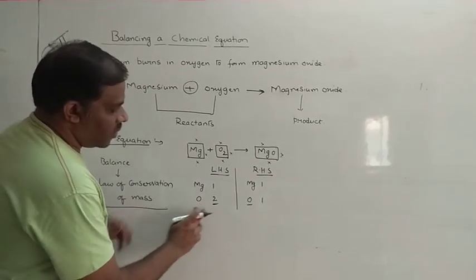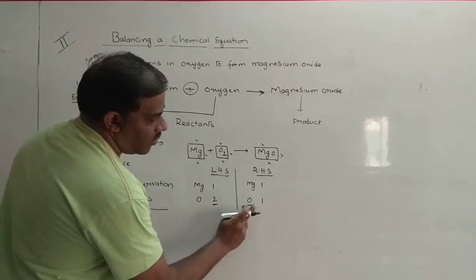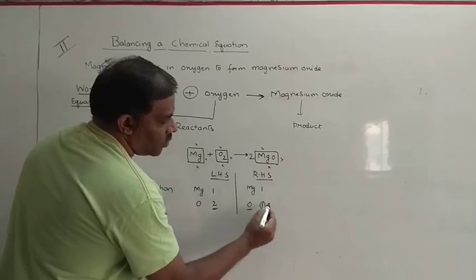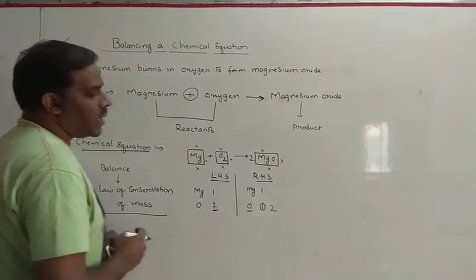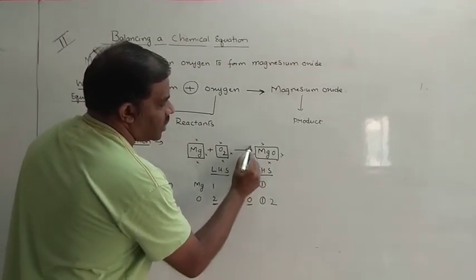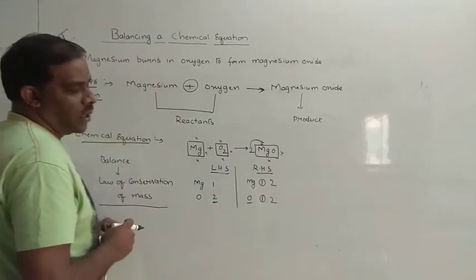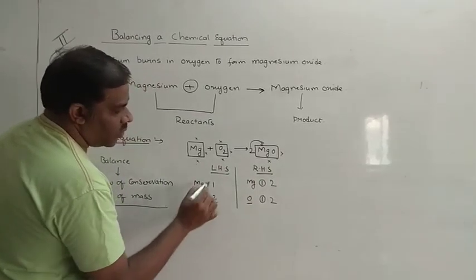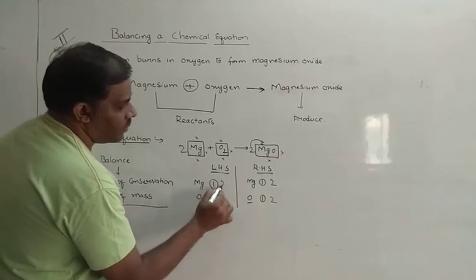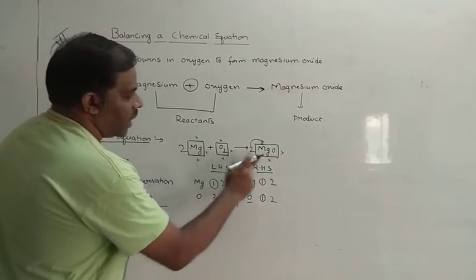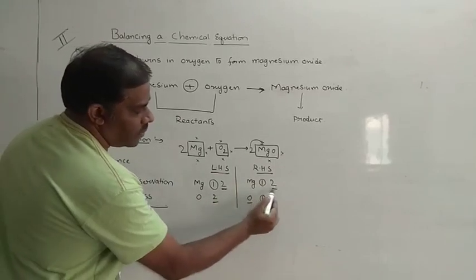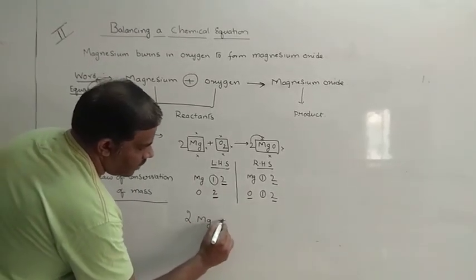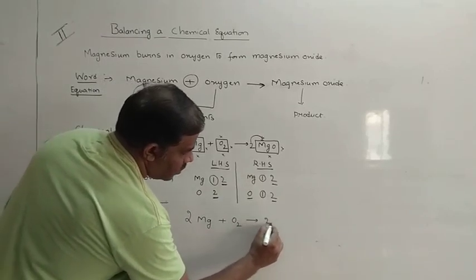If we observe the number of oxygens, there are 2 on the left but only 1 on the right. So we multiply MgO with 2, giving us 2 oxygens. But at the same time, the number of magnesiums are also 2 on the right side now. So we write a 2 in front of Mg as well. Now it becomes a balanced equation. The number of magnesiums are 2 and the number of oxygens are 2. The balanced equation is 2Mg plus O2 gives rise to 2MgO.